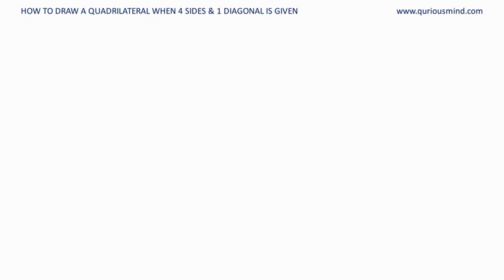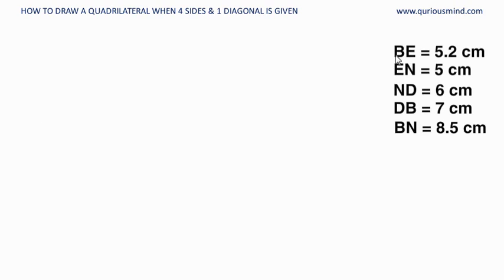First let's see the measurements. So here we have to draw quadrilateral BEND where measures of BE, EN, ND, and DB are sides, and BN which is a diagonal is given. So four sides and one diagonal is given.